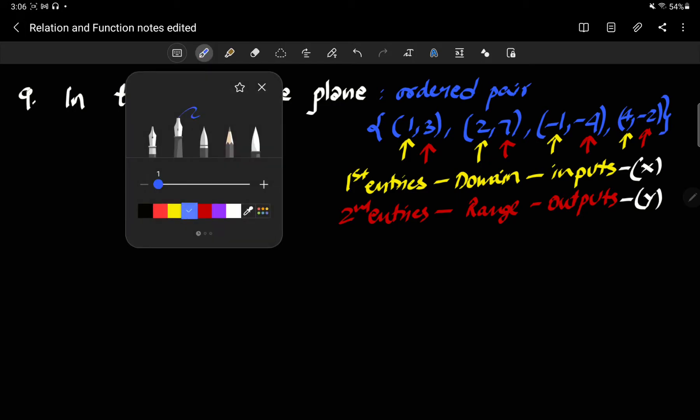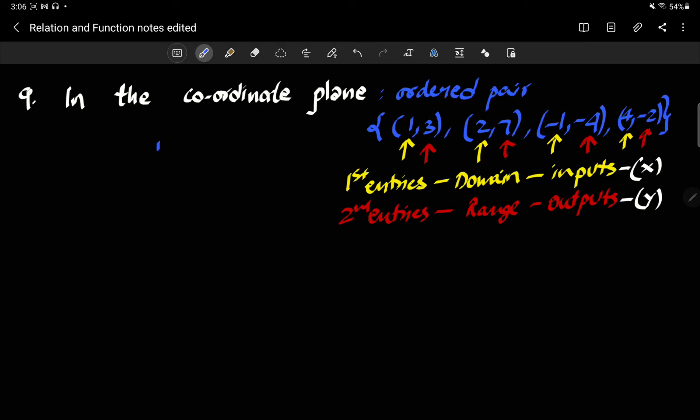Once that is defined, all we have to do is we take two number lines and place them orthogonally, meaning at 90 degrees, and we arbitrarily call this x, which corresponds to the first entry, domain, inputs. And we call this the y-axis, which corresponds to the second entry in the ordered pair, the range, output. All these are synonymous terms, so in your head whenever you hear one of them you should visualize the remaining.